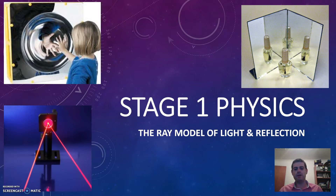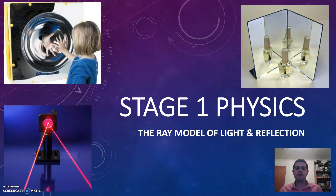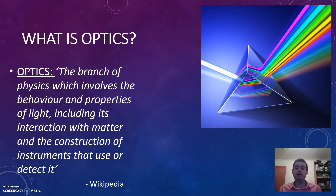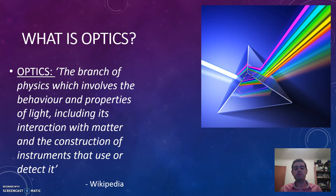Welcome to our first video in this series on light and optics, which we'll be doing for the next few weeks. This first video is going to look at what we call the ray model of light and how it's used to describe and explain reflection off different surfaces. But before we get to that, we better define what we mean by optics — the branch of physics that looks at how light behaves when reflecting off surfaces, passing from one material into another, and how we apply that knowledge to technologies like reading glasses, telescopes, and microscopes.